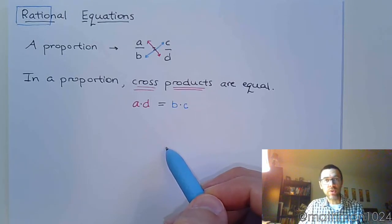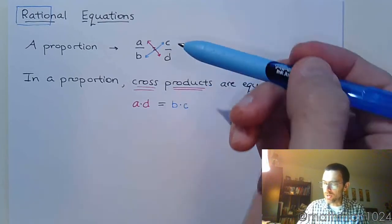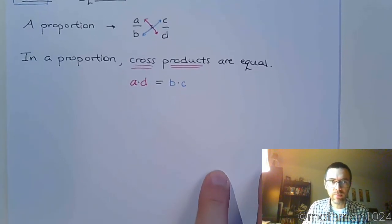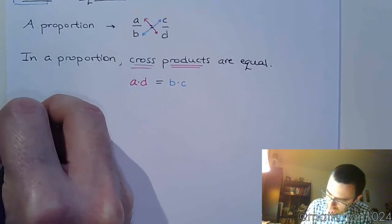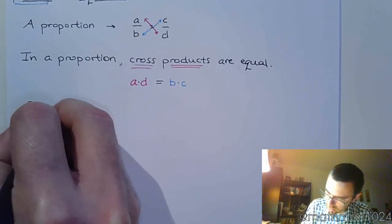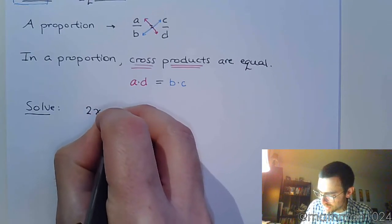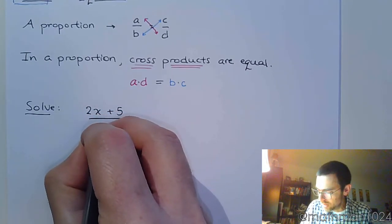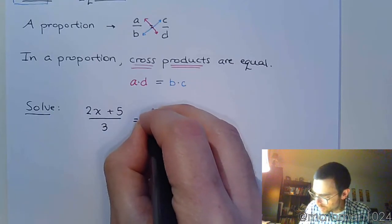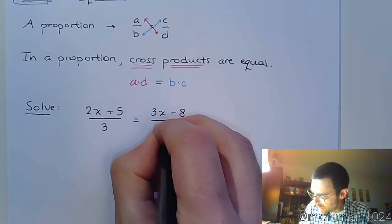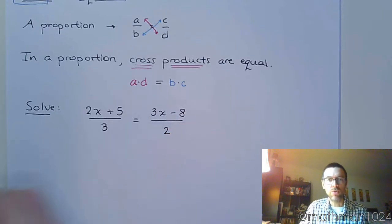And so, by doing this, by setting the cross products equal, we go from an equation that has fractions to one that doesn't have fractions. So, let's see what that looks like for us. Let's take this equation and see if we can solve it.